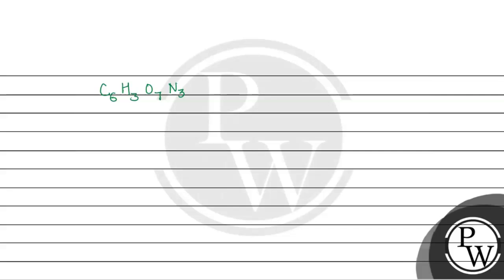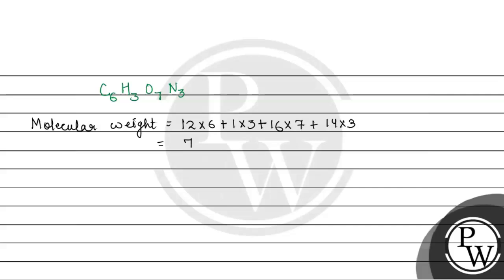The question asks for the weight percentage of hydrogen. So now we find the molecular weight. This will be equal to: carbon is 12, there are 6 carbons, so 12 × 6; hydrogen is 1, there are 3 hydrogens, so 1 × 3; oxygen is 16, multiply by 7; plus nitrogen is 14, multiply by 3. This gives 72 + 3 + 112 + 42 = 229 grams per mole.